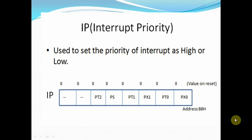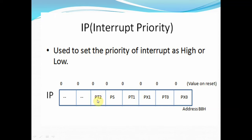By using the IP register, we can set or alter the priorities of interrupts. The IP register is also an 8-bit register. PX0 is the external interrupt 0 priority bit, PT0 is the timer 0 interrupt priority bit, PT1 is the timer 1 interrupt priority bit, and PS is the serial communication interrupt priority bit. PT2 is not focused here as it belongs to the advanced version of 8051 which includes timer 2. Let us now see how to change priority using the IP register.